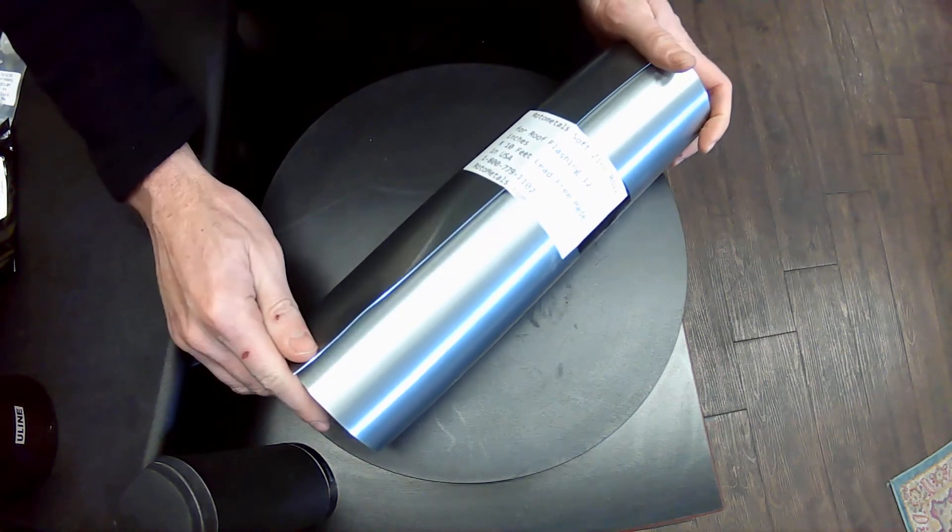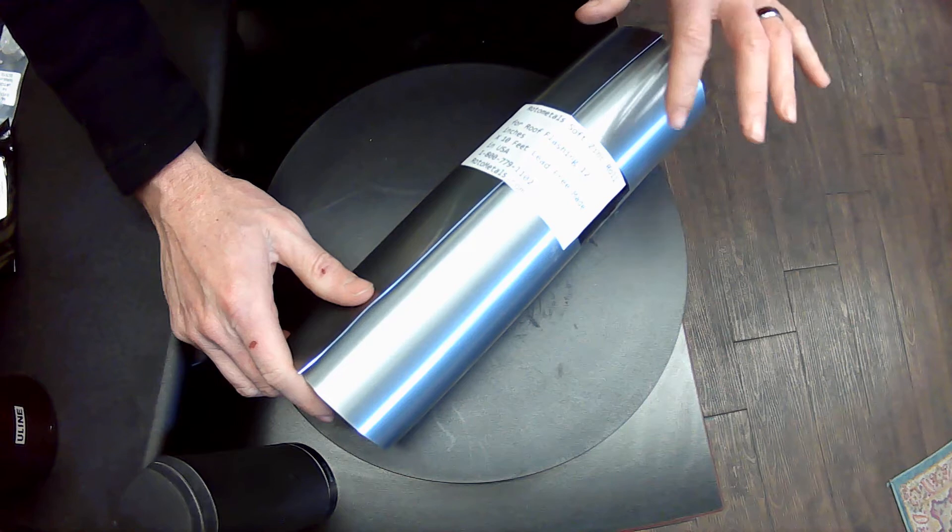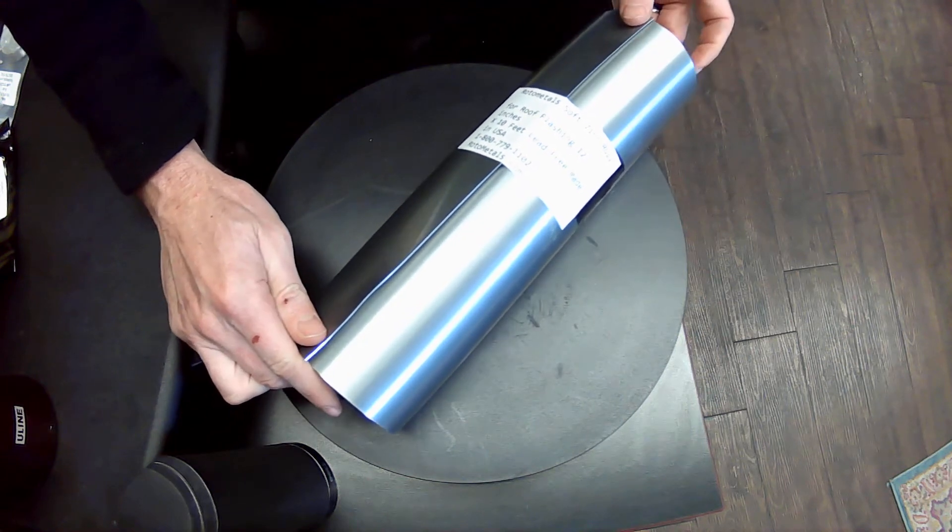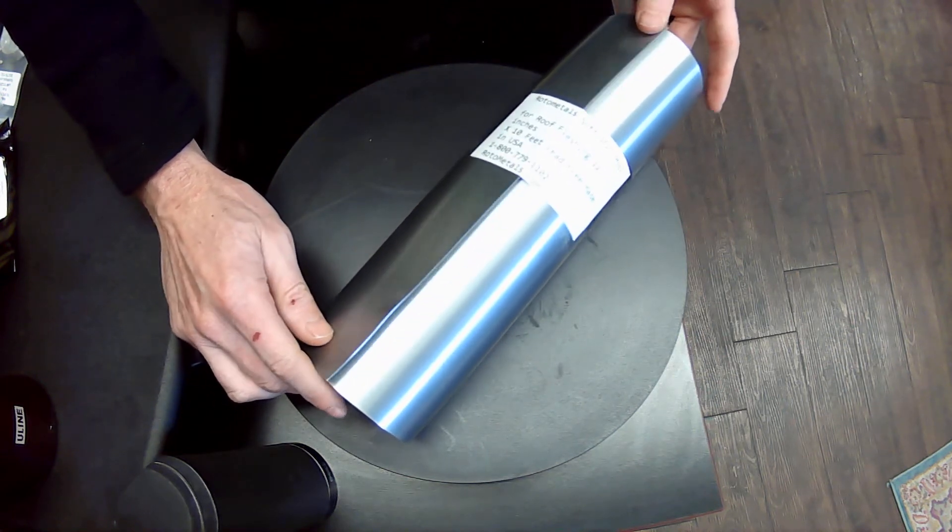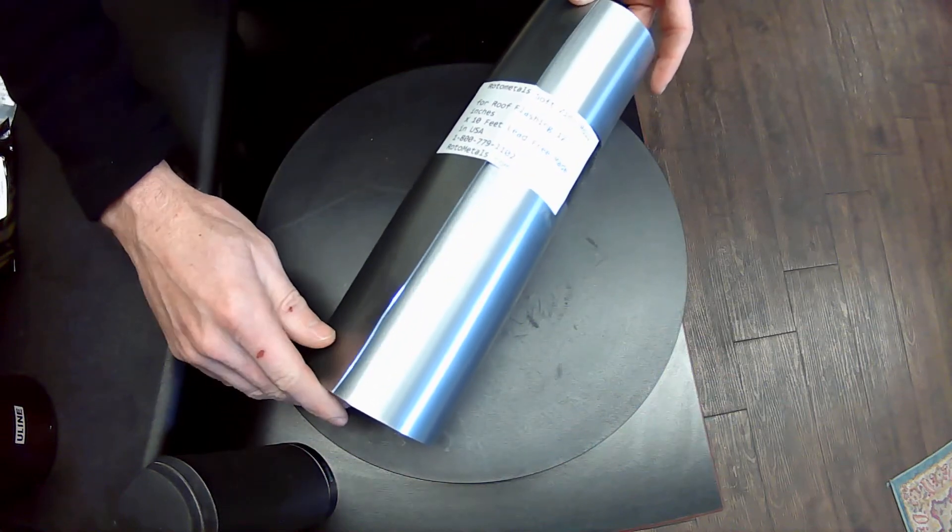This is about .027 inches thick. It's basically equivalent to approximately a two pound lead, which is a very common roof flashing thickness.